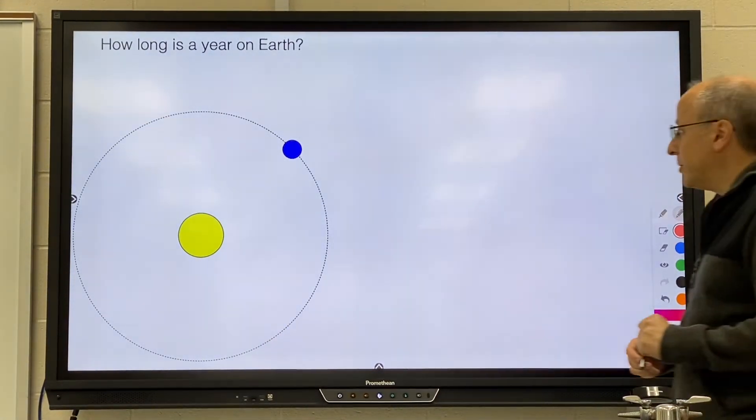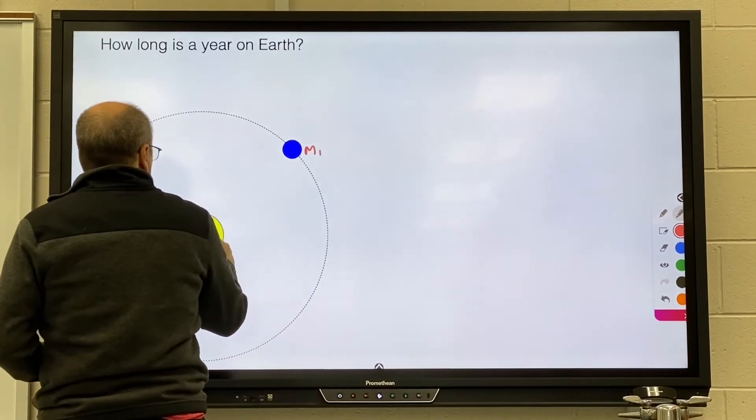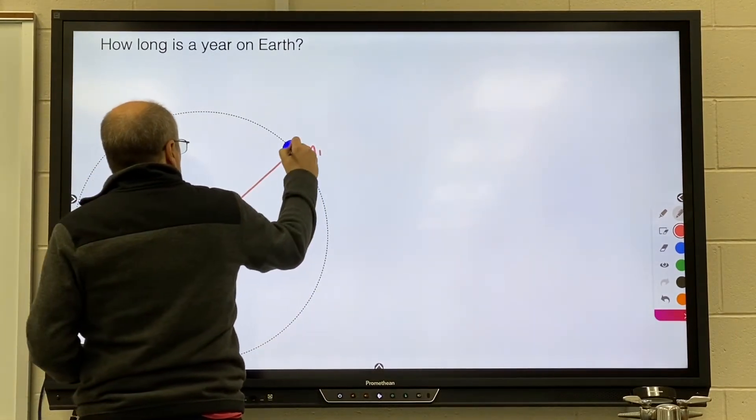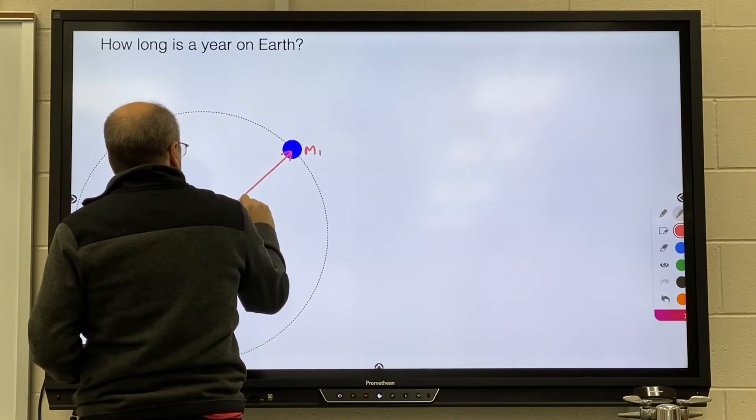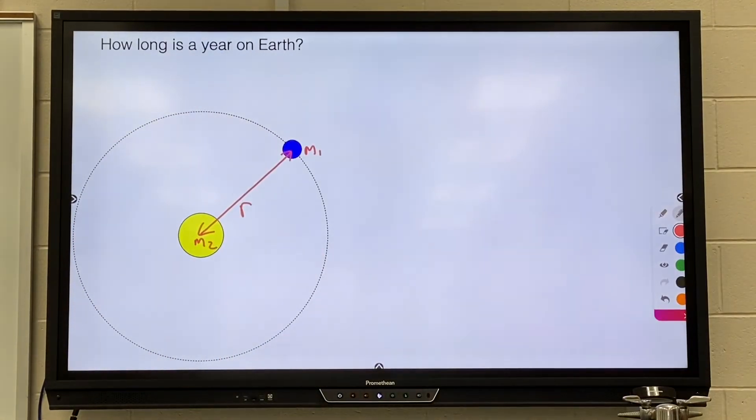Starting with the mass of the Earth and the mass of the sun, and how far apart they are, all of those you can get from your reference sheet, we are going to calculate the length of the year.